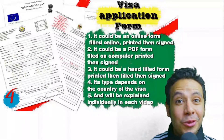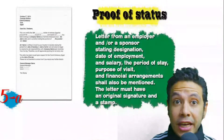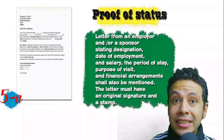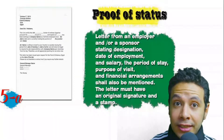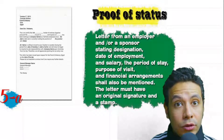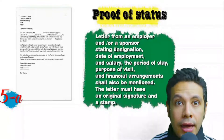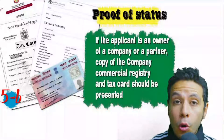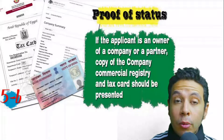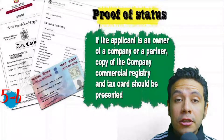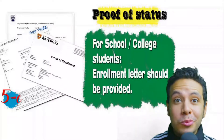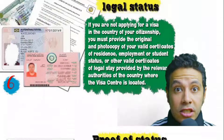In most visa application processes you will need to provide a proof of status. If you are an employee, provide a letter from your employer or HR department mentioning your name, work details, salary, address, and contact numbers. All letters must have an original signature and stamp. If you own a business, your commercial registry and tax card must be presented. If you are a student, an enrollment letter from your university or school should be provided.